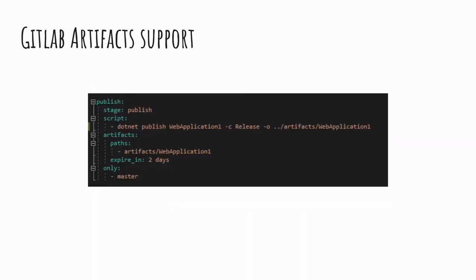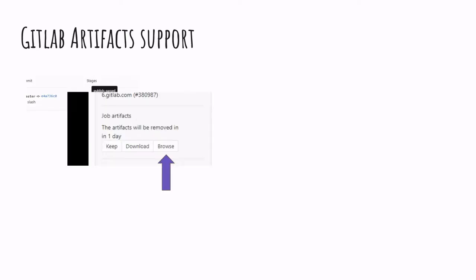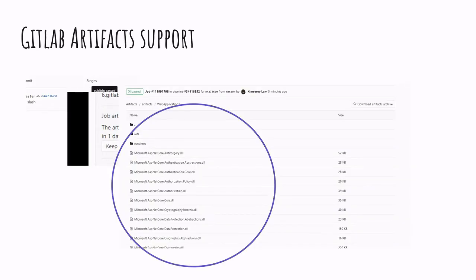In our example, in the publish job, we define an artifact by specifying the output path of .NET publish. We also define that the artifact will expire in two days. This will allow us from the GitLab website to browse and understand what has been deployed, or even to download locally to examine the content of the artifact.